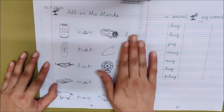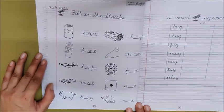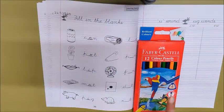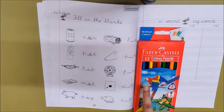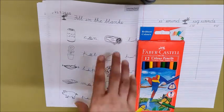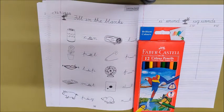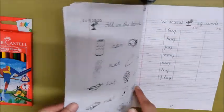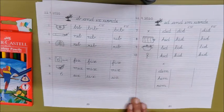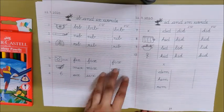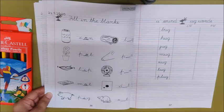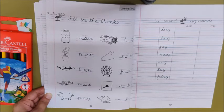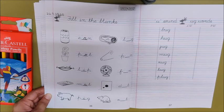So, children, ye wale words aap complete karoge khud se. And then you will colour all the pictures with colour pencils. Please do not use crayons in your book. You will only use colour pencils in your book. Colour all these pictures and then you will send photo of this work and of these pages also. 20, 21 and 36 to me. I will be waiting to see your beautiful handwriting and we will meet on Thursday. I am excited to listen to your rhymes. We will see you soon. Bye children. Take care.